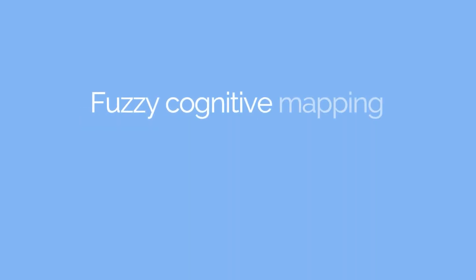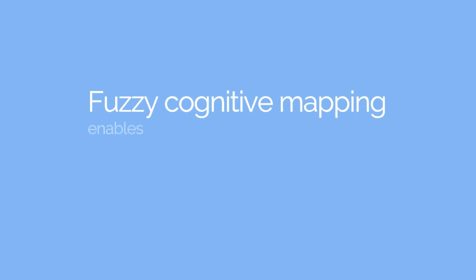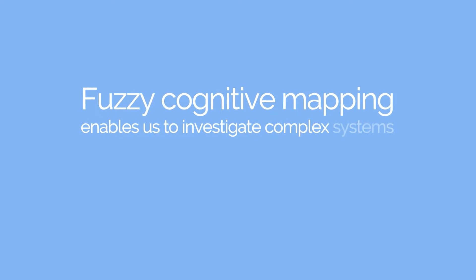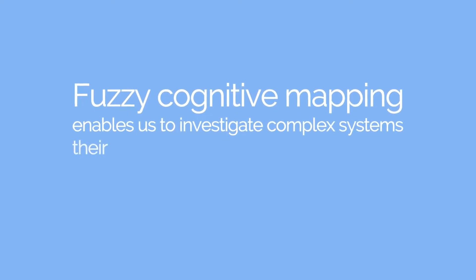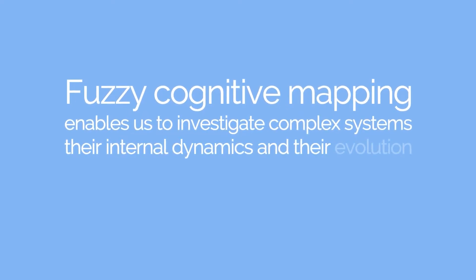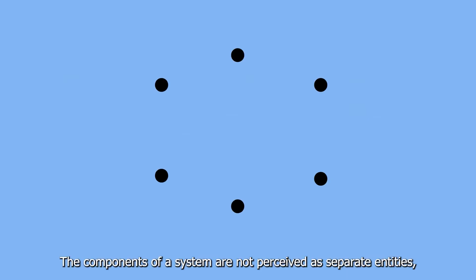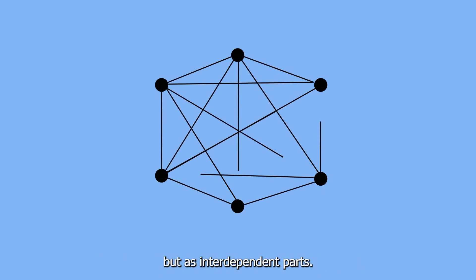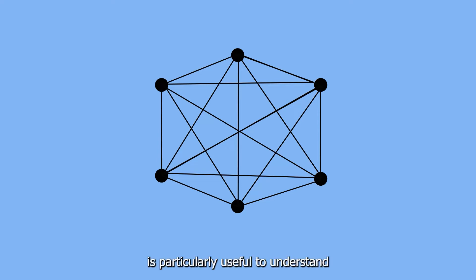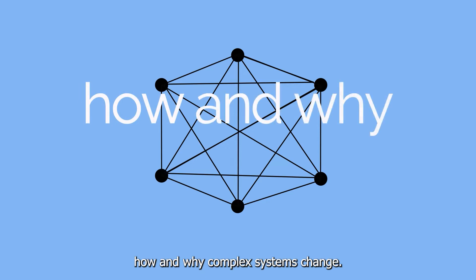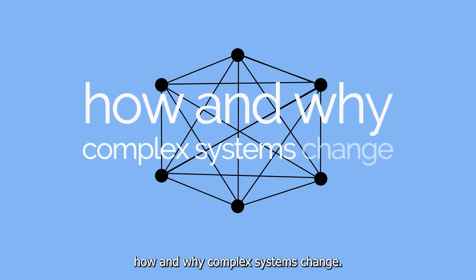Fuzzy cognitive mapping enables us to investigate complex systems, their internal dynamics and their evolution. The components of a system are not perceived as separate entities, but as interdependent parts.